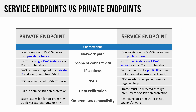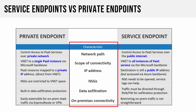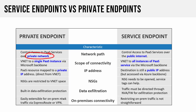Here's a table comparing private endpoint on the left and service endpoint on the right. For network path: private endpoint controls access to PaaS services over a private network, while service endpoint controls access over the public internet. Private endpoint connects a VNet to a single PaaS instance via the Microsoft backbone; service endpoint connects to all instances of a PaaS service. PaaS resources are mapped to a private IP with private endpoint, while the destination remains a public IP with service endpoint — it's just access via the Azure backbone. Enabling a service endpoint will give you a warning about a momentary interruption in service.